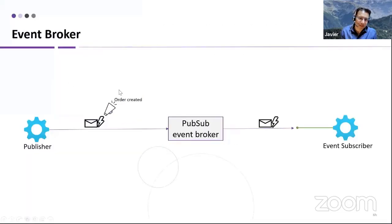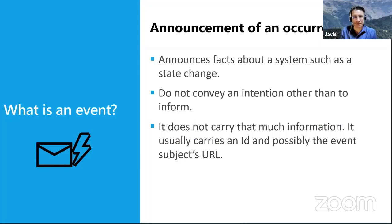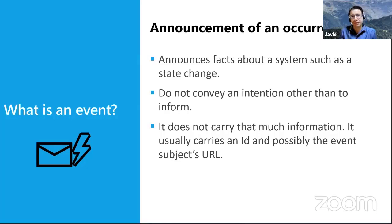I'm differentiating here between a message and an event. An event is a kind of message, but a very specific type. An event is really an announcement or an occurrence that something happened — usually a state change in your system. It doesn't convey expectations about what to do with it; it just informs that something has happened. It doesn't carry much information. It contains the subject of the event — what changed, what was created, what resource — and usually a URL the recipient can call to get more information.